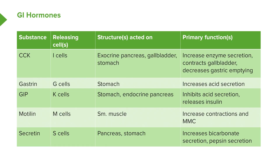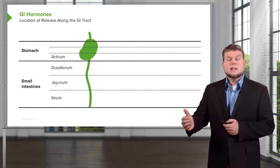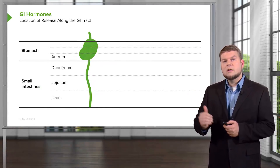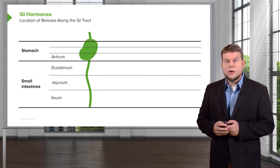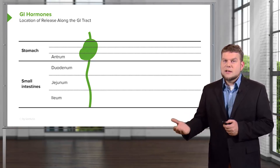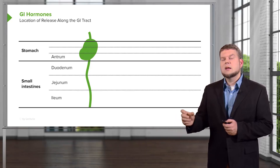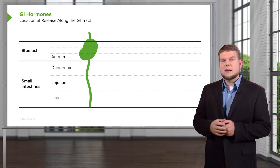We have a few other items to deal with besides the GI hormones, and that is local signaling molecules. These local signaling molecules are called paracrine signaling molecules. But before we do that, let's first talk through where the GI hormones come from — not just the cell types, but more generally where anatomically they come from.